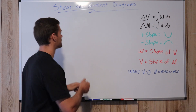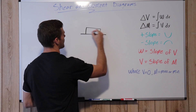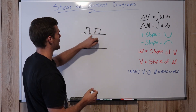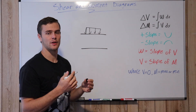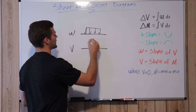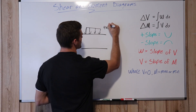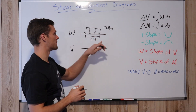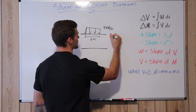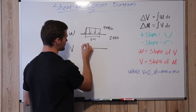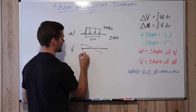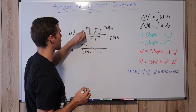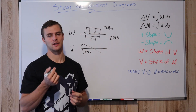Say we have a beam with a distributed load going across it, and then we have our shear function. The amount of area under this line is going to be the amount that our shear changes. Say this is 4 kilonewtons per meter and it goes across 6 meters — the change in shear is going to be 24 kilonewtons, because 6 times 4 is 24. If it's positive area under the curve, it is going to be a positive change in the shear.